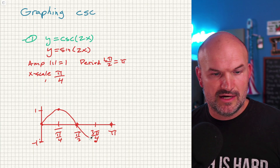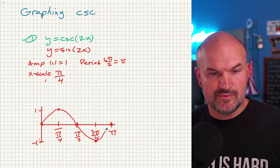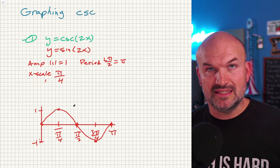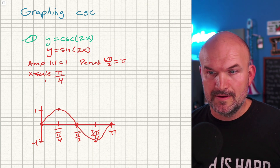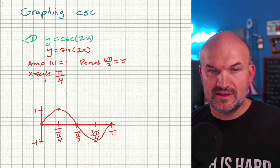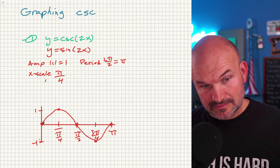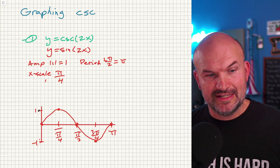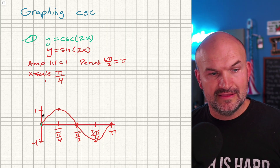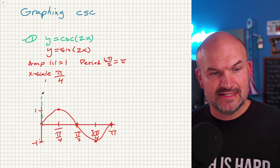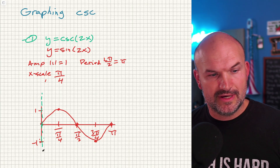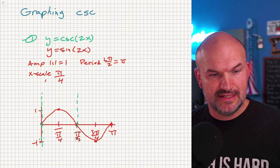The important thing for cosecant is that wherever sine has an x-intercept, that creates a vertical asymptote for cosecant. So you go to these intercepts and draw vertical asymptotes there.